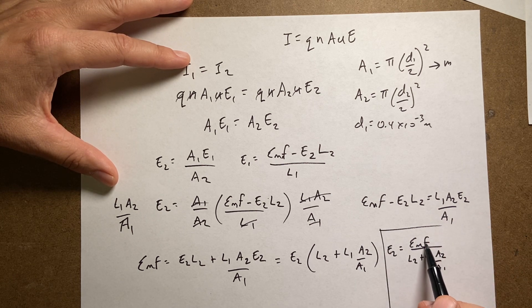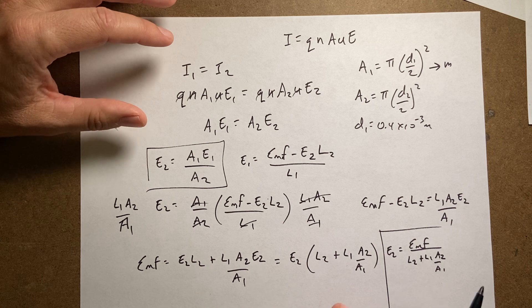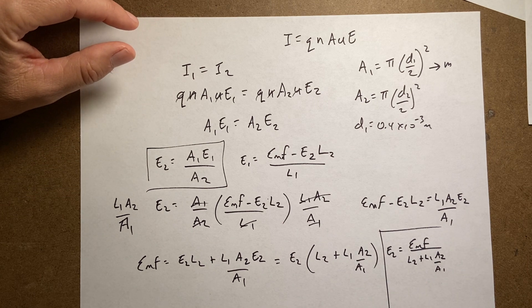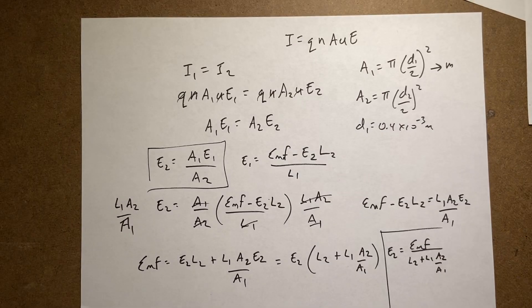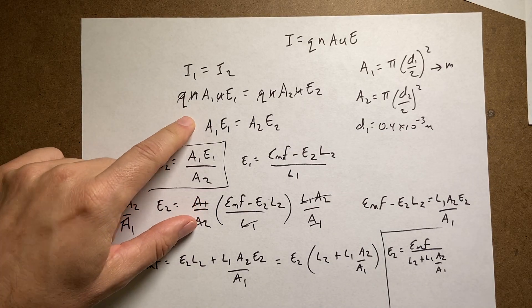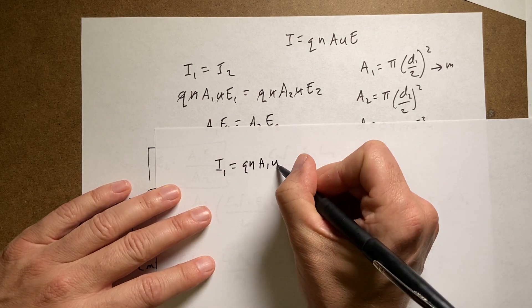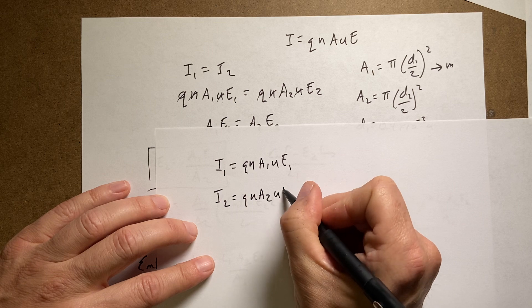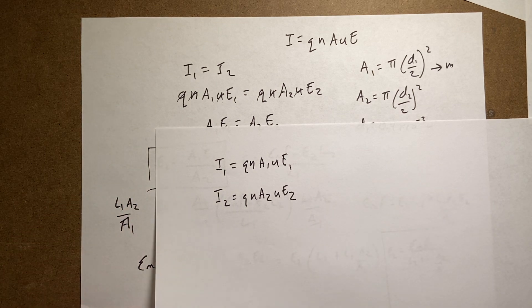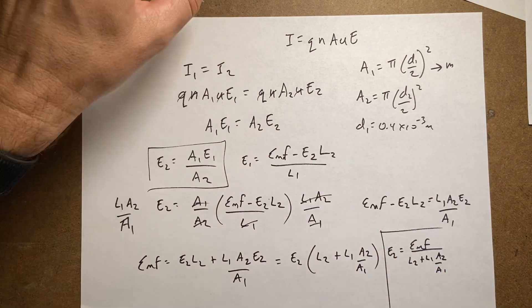I know all these values, so I can plug that in and find E2. Then I can go back and find E1. For the electric current: I1 equals Q N A1 U E1, and I2 equals Q N A2 U E2. Everything is just a number at this point, so it's straightforward to calculate.